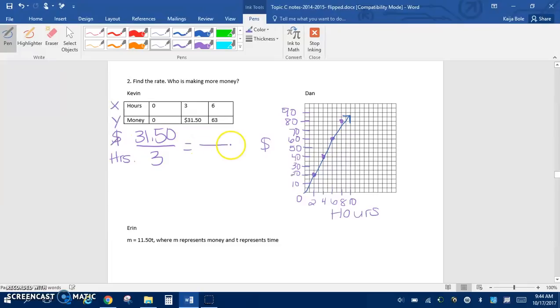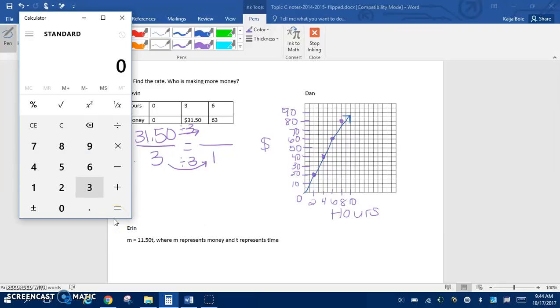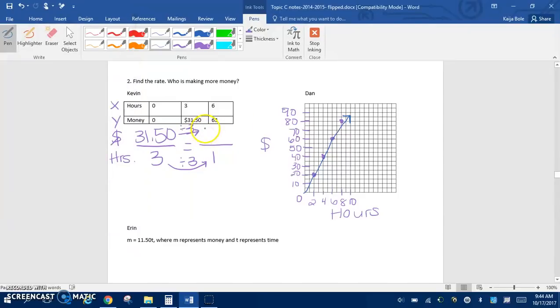So we want to know how much Kevin makes in 1 hour. That means we would divide by 3 on the bottom and on the top. So in your calculator, if you do 31.5 divided by 3, you would get 10.50. So that means that Kevin makes $10.50 in 1 hour.